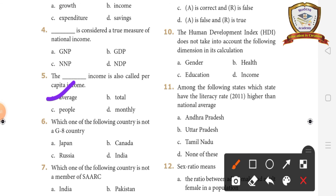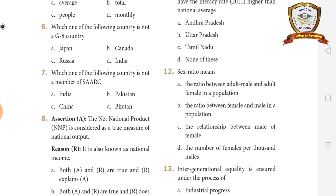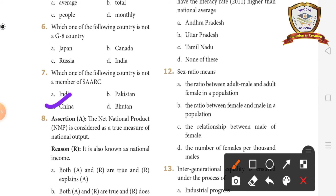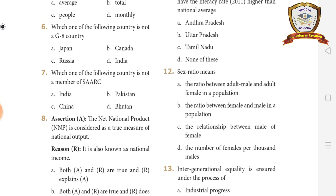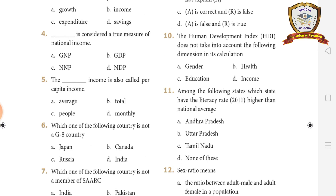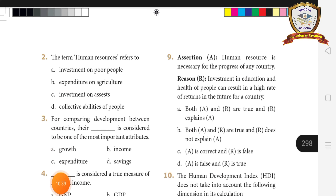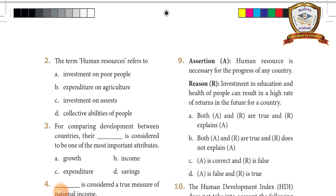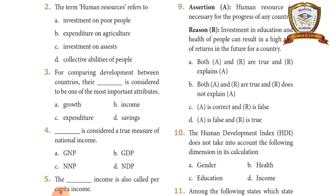Which of the following countries is not a G8 country? — India is not a G8 country. Which country is not a member of SAARC? — Option C, China. The Net National Product (NNP) is considered a true measure of national output; reason — it is also known as national income. Answer: option A. Human resources are necessary for the progress of any country; reason — investment in education and health can result in higher returns for the country. Answer: option A — both A and R are true, and R explains A.